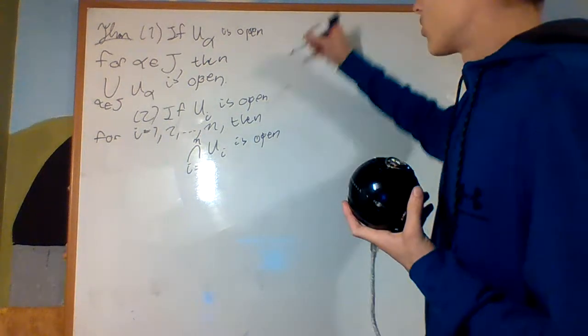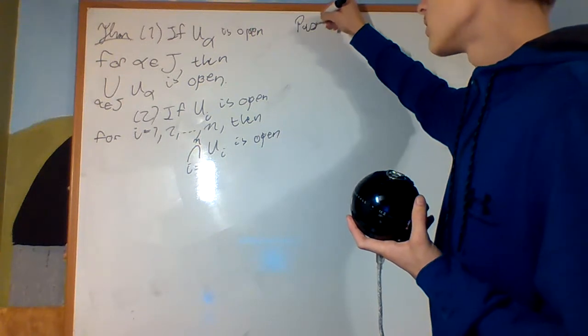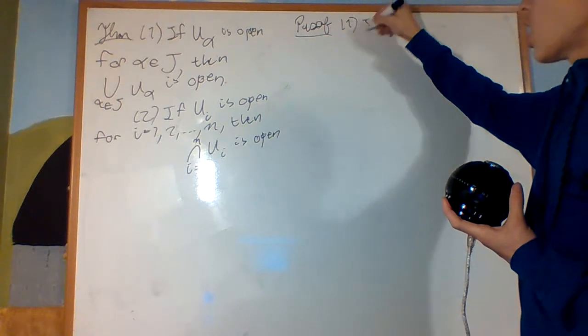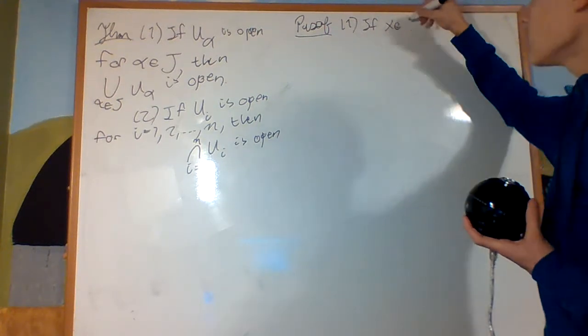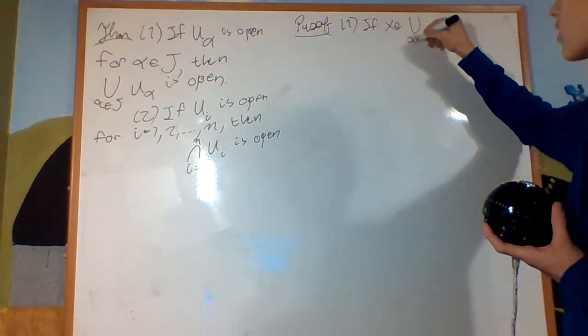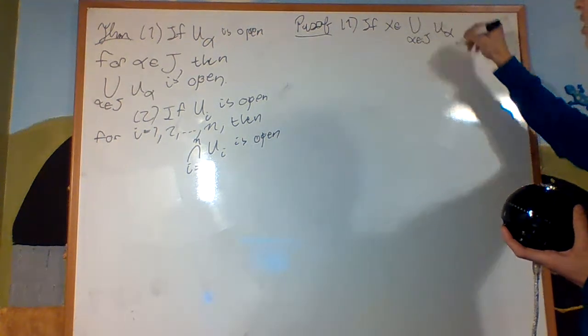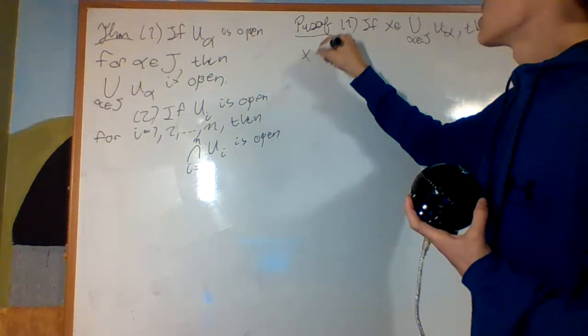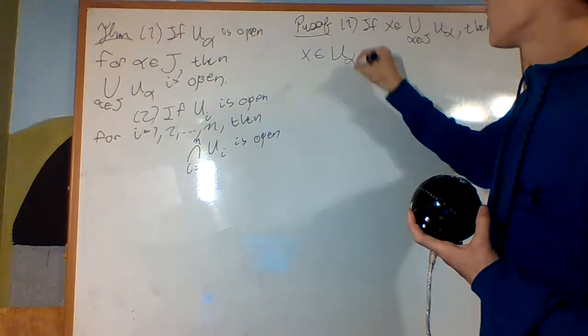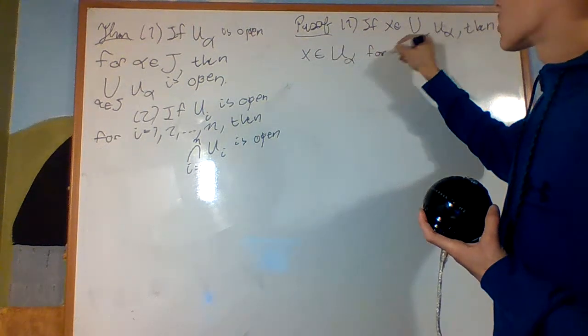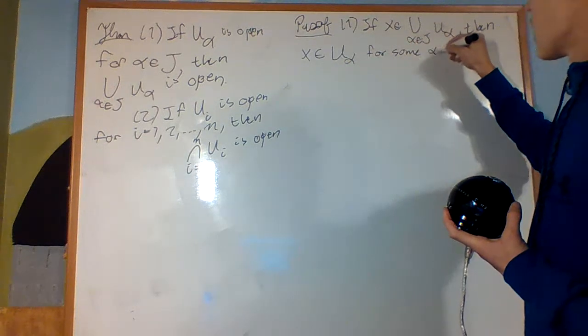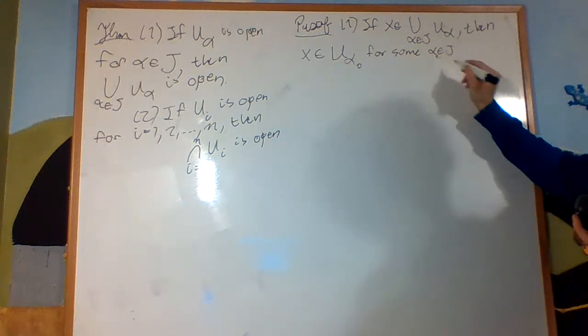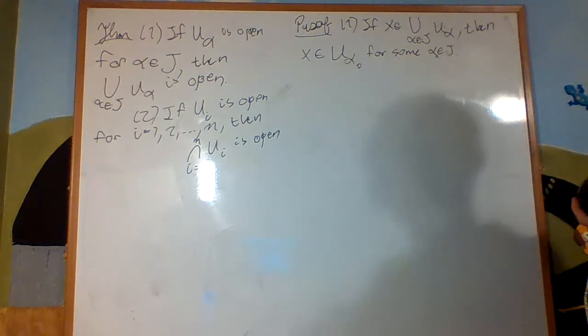So proof. I'll put over here. Proof. The proof of the first one. So if x is an element of the union for alpha in J of U_alpha, then x is an element of U_alpha for some alpha in J. I'll call it alpha naught. Alpha naught in J. That's the definition.